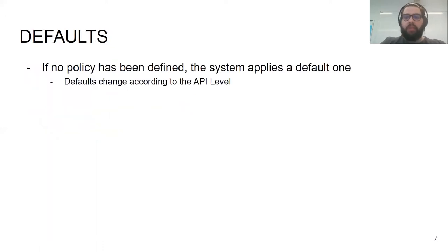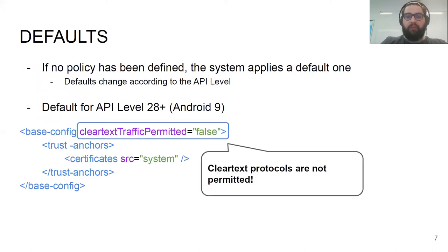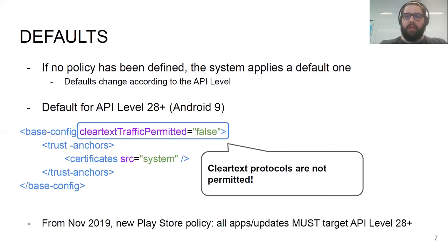If the application is not defining any network security policy, at installation time the system applies a default one, which changes according to the API level the application is targeting. The latest default, introduced in Android 9 and valid for Android 10 and 11, completely forbids clear text protocols from the application. This means Google is essentially trying to push all developers to adopt HTTPS everywhere. Starting from November 2019, all new applications and updates published on the Google Play Store must target at least API level 28.